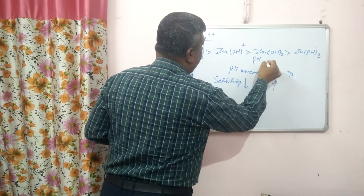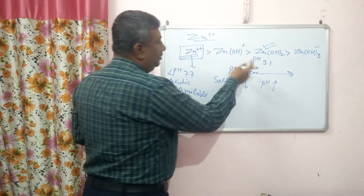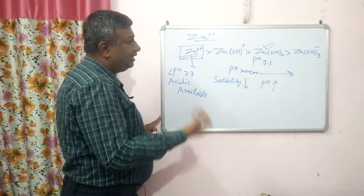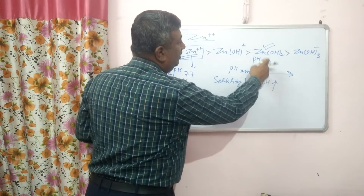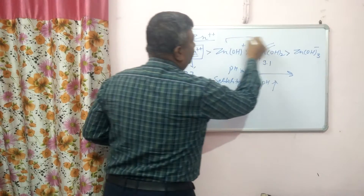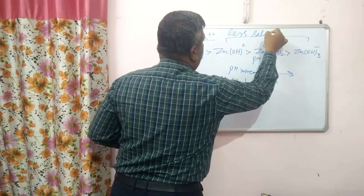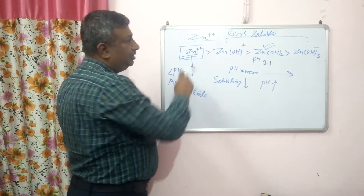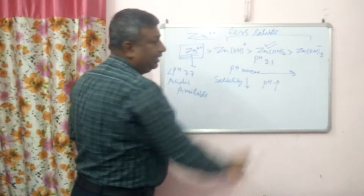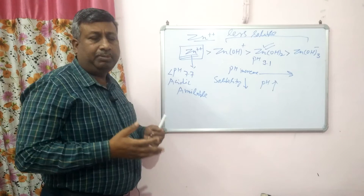At pH 9.1, Zn(OH)₂ is the major species. After pH 7.77, ZnOH⁺ formation takes place. When pH is more than 9.1, the Zn(OH)₂ hydroxide form dominates. These forms are less soluble — that is why at high pH there is less solubility, and zinc availability is reduced. This is the first reason.